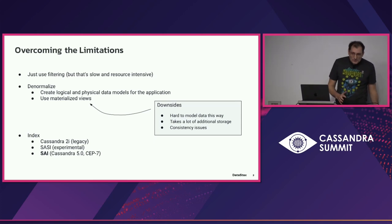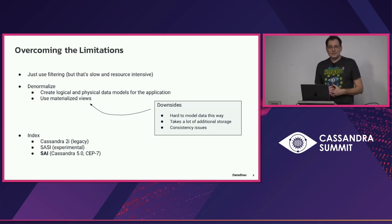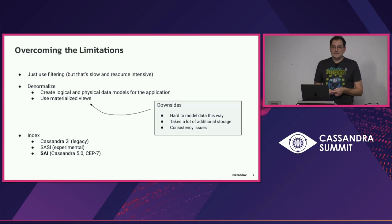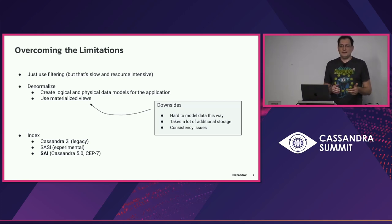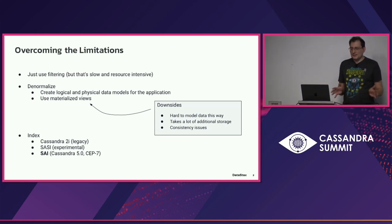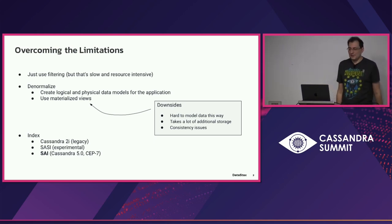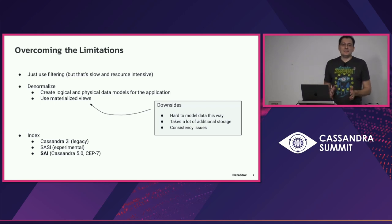There are also legacy Cassandra 2i secondary indexes, which work similarly to creating a separate table locally on each node — they have limitations like no range scans and you cannot use multiple indexes on multiple columns in the same query. Then there is SASI, which is a bit more modern but still experimental, and also has the limitation that you cannot use multiple indexed columns in a single query expression. And now the feature I'm presenting — SAI, Storage Attached Indexing — is a big improvement over these previous indexes.